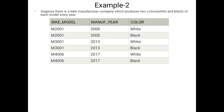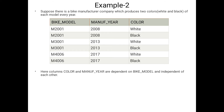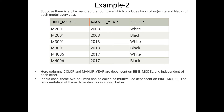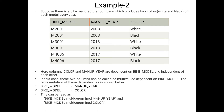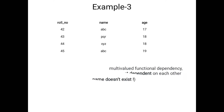Another example: a bike manufacturer company produces two colors of each model every year. Manufacturing gear and color are independent attributes, but both are dependent on the bike model. So we decompose into two tables: bike model implies manufacturing gear, and bike model implies color. The bike model multi-determines both manufacturing gear and color.